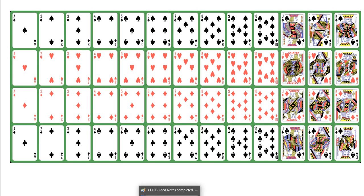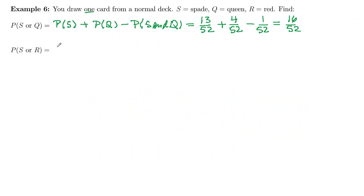So this will be the addition rule for mutually exclusive events. We just take the probability of spades and we add the probability that it's a red card. That's it, nothing to subtract out here.